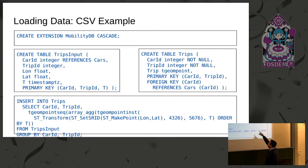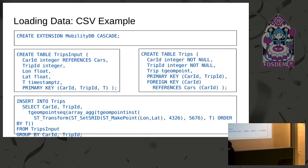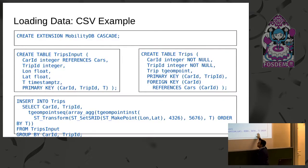With MobilityDB, you have one column called 'trip' which is a T geometry point — this carries the complete trip. So every row in this table will represent a trip. In order to load data and create your trips, you basically combine every point with its timestamp, do whatever projection you want to put it in the required coordinate system, create an instance of these, and then aggregate all instances that are for the same trip and same car into an array, and then put this array into a temporal geometry point — so now you have a complete trip as a single data item.